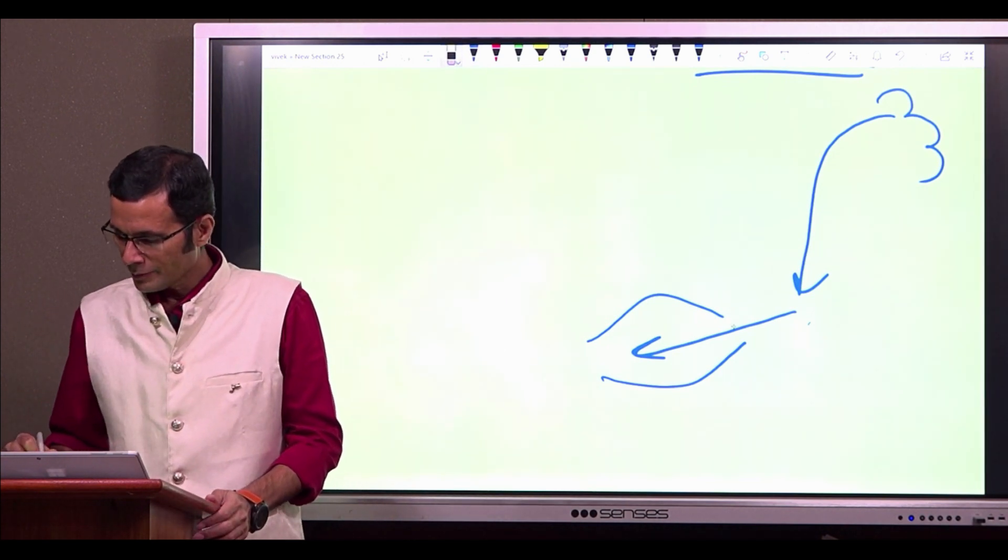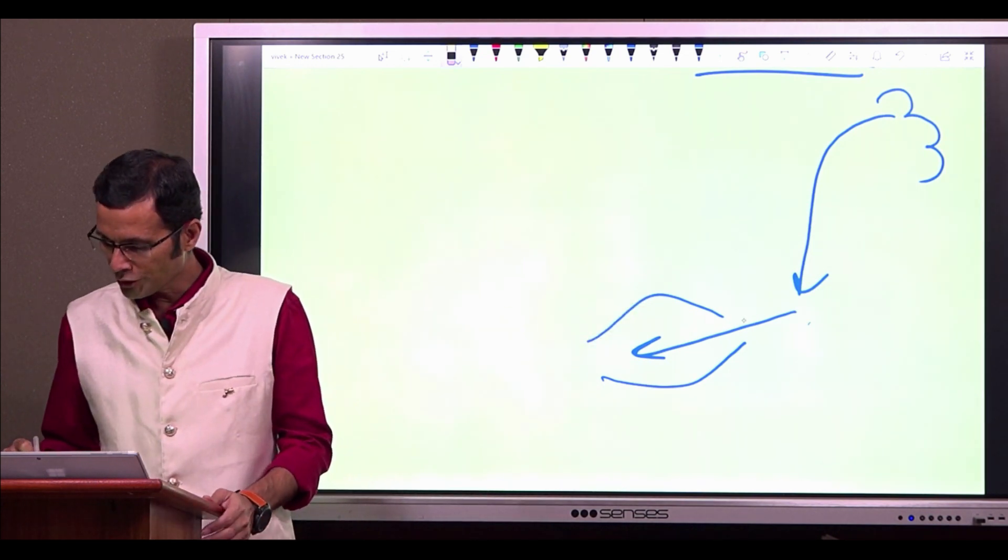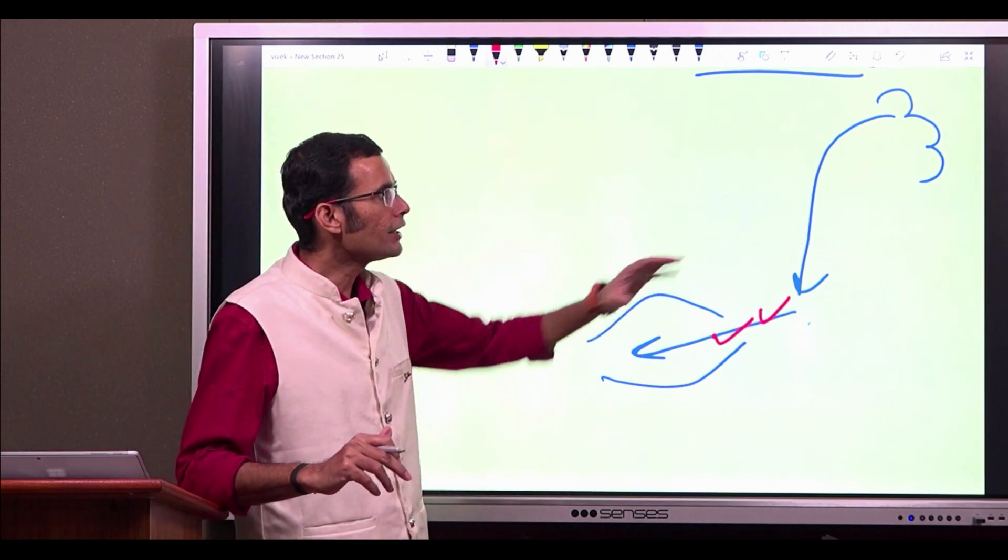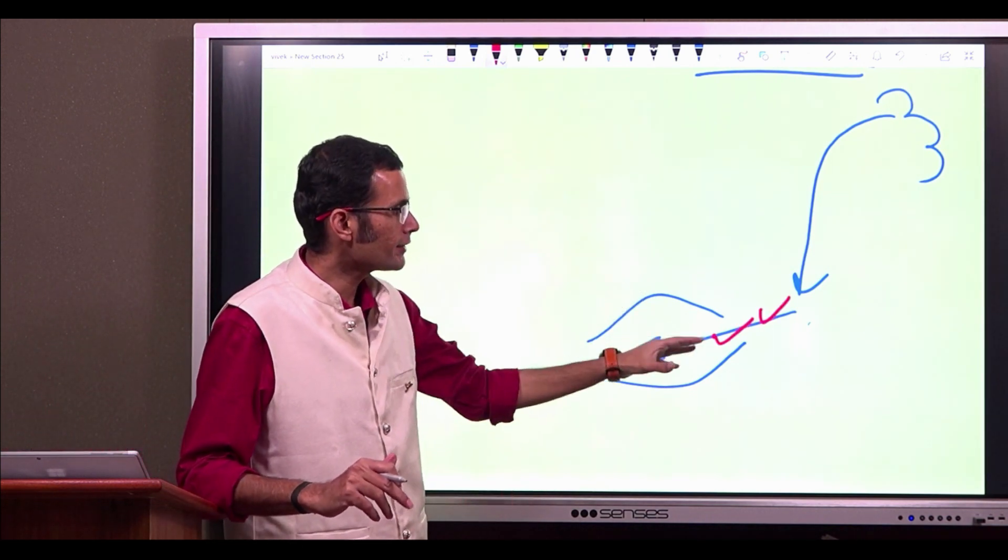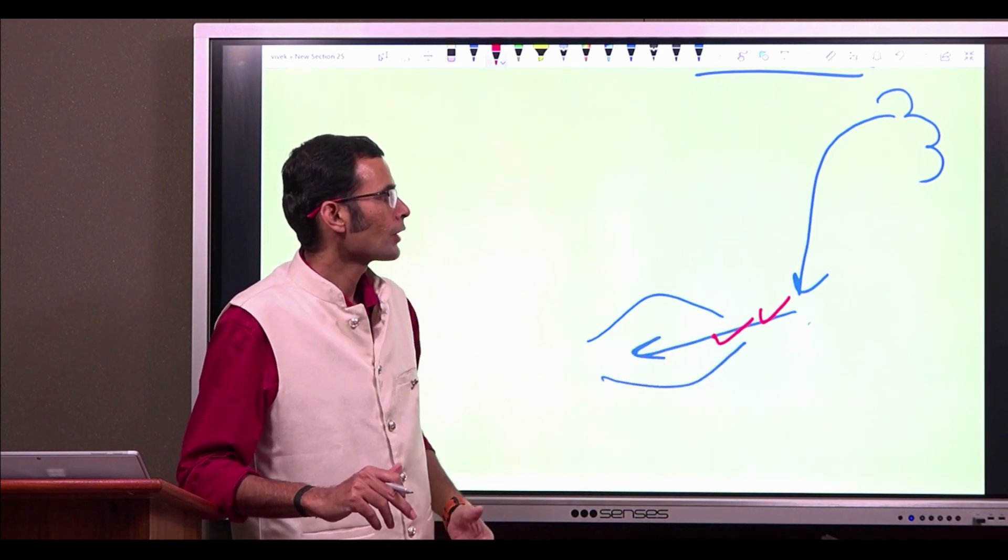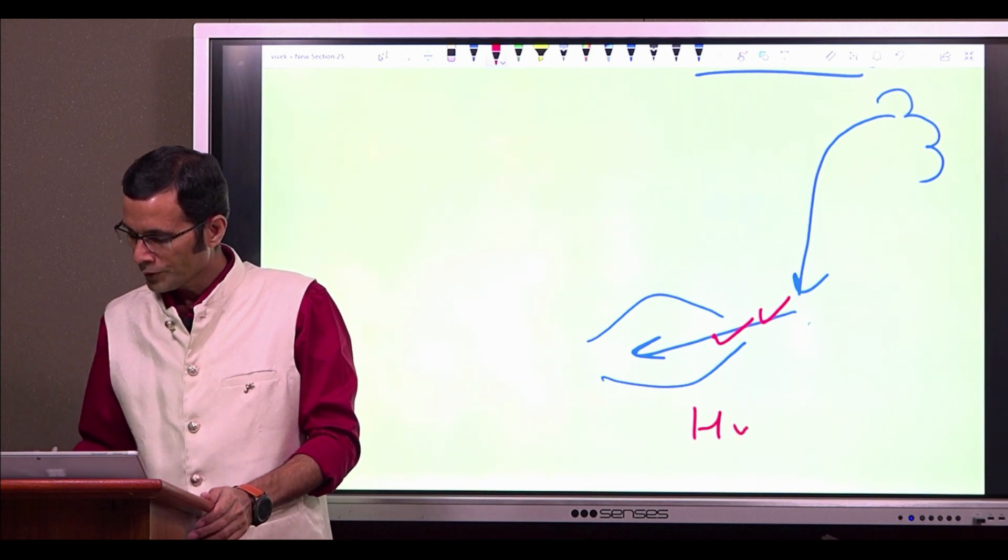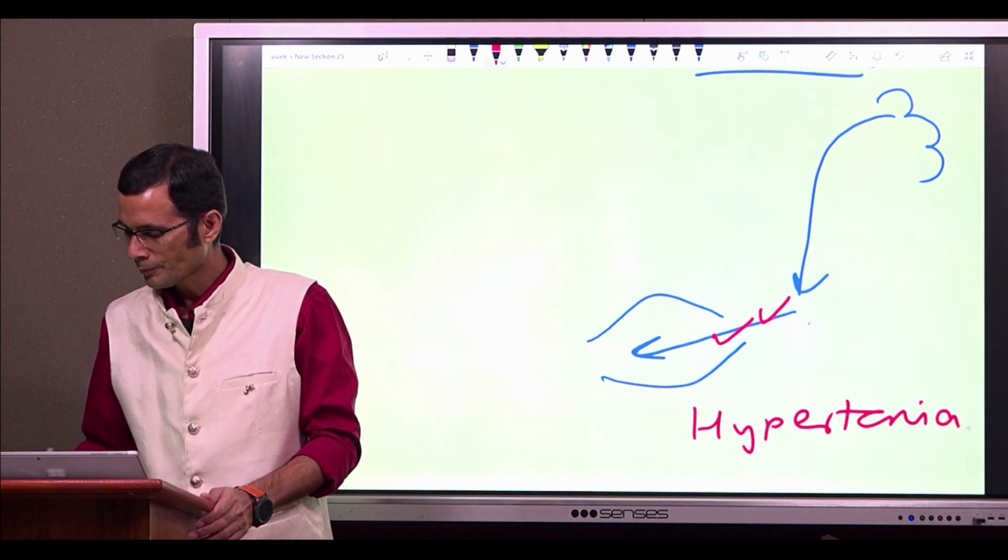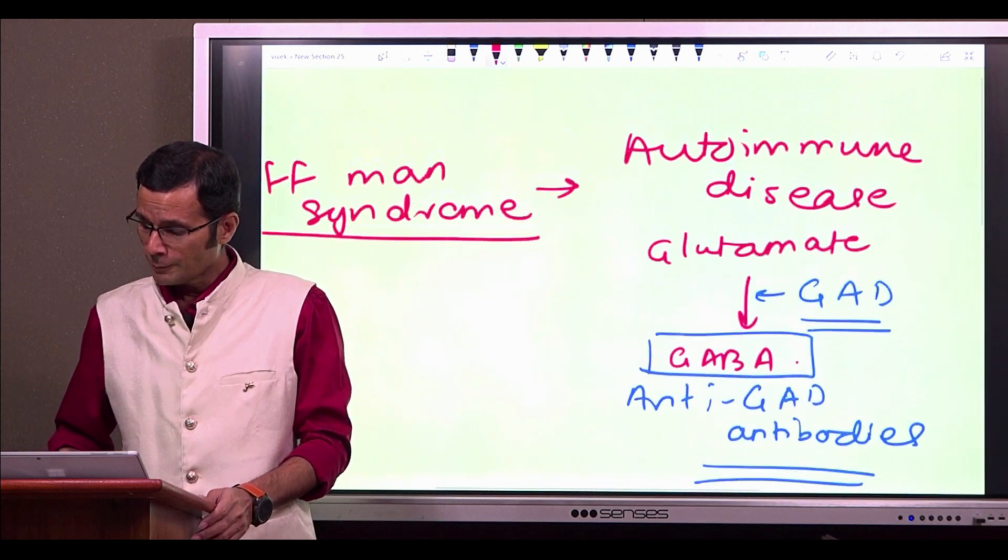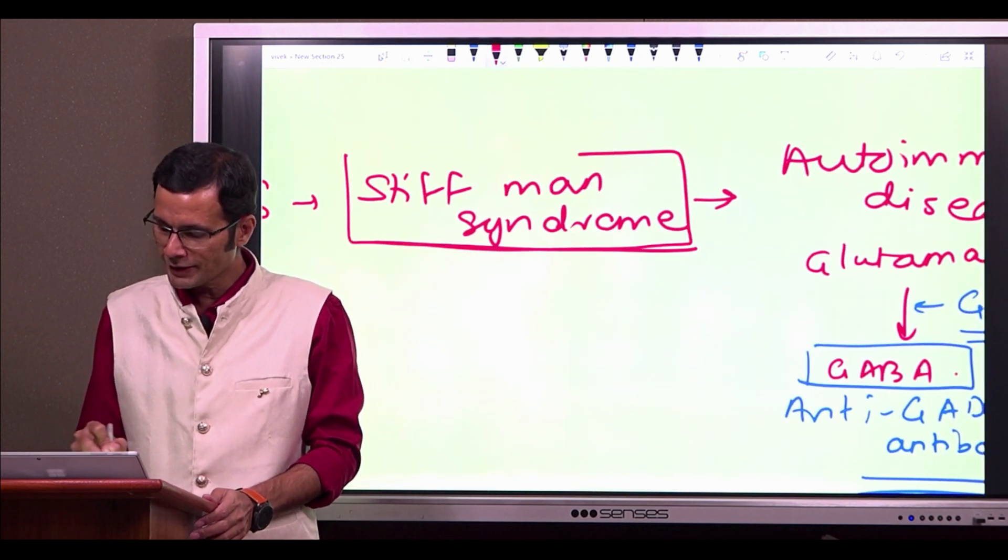The result is, there is excessive activity in the lower motor neuron, excessive activity that inhibitory influence is gone and therefore, excess activity in the spinal cord motor neurons. This results in hypertonia, excessive tone in the muscles and exaggerated stretch reflexes.